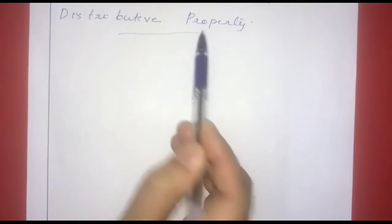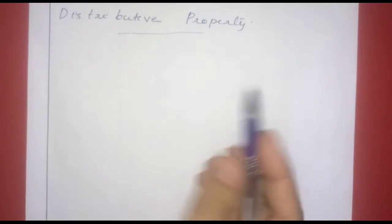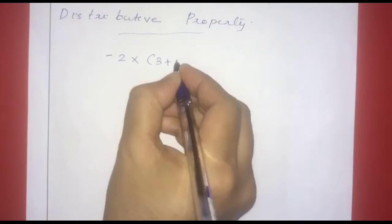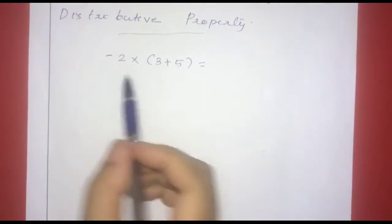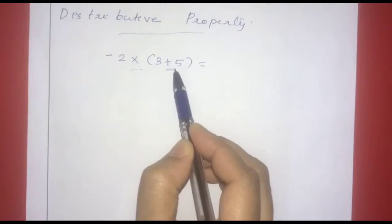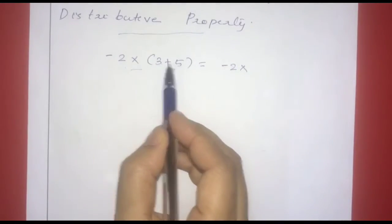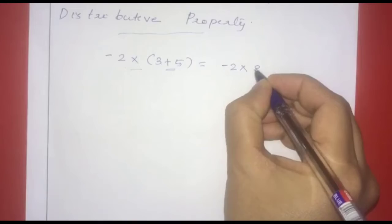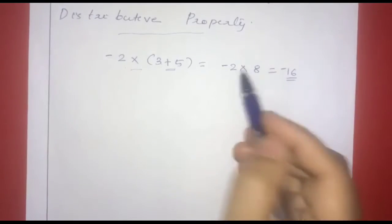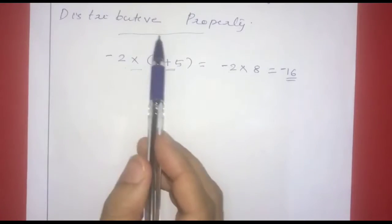The next property is the distributive property. Let's take an example: negative 2 into (3 plus 5). We add 3 plus 5 to get 8, then negative 2 into 8 equals negative 16. The opposite sign gives a negative result.